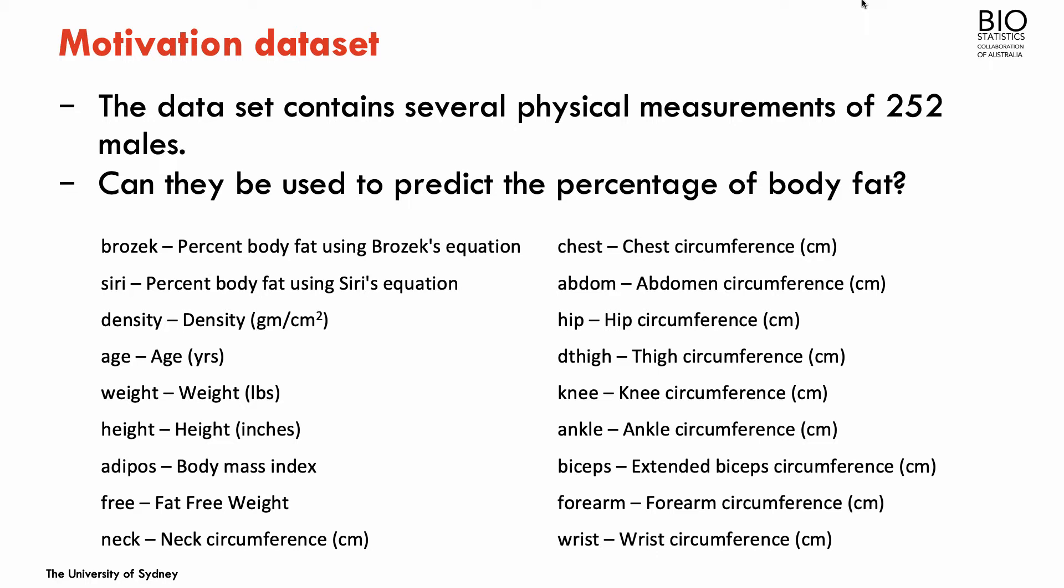Percentage of body fat is going to be given by the variable Brozac that uses, as the name says, Brozac's equation to calculate the percentage body fat. And we're going to use pretty much all the other variables as predictors for Brozac, to the exception of Siri, which is also another way of computing the percentage of body fat, density, which is used in the calculation of body fat, and also the free fat-free weight, which is a measurement derived from the percentage of body fat. So to the exception of these variables, we're going to use the other ones as predictors of Brozac.